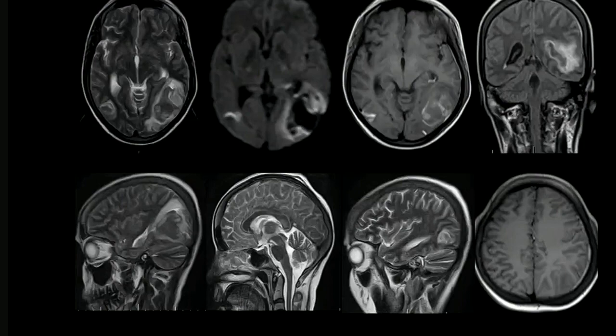Just a minute. It's a T1 image. Coming to the bottom row, the first three are sagittal images — starting from FLAIR, then T2, then again. Why is the first one in the second row FLAIR?